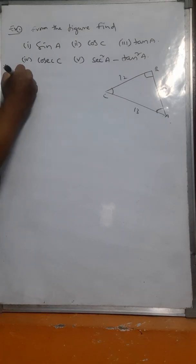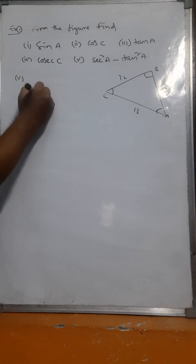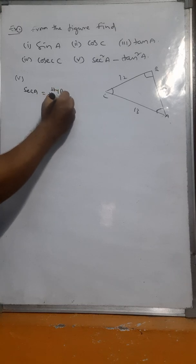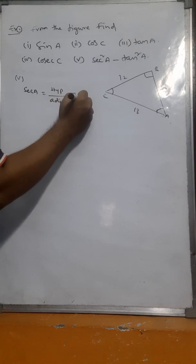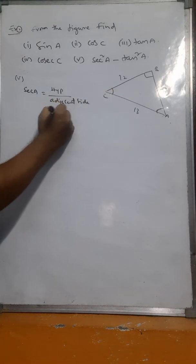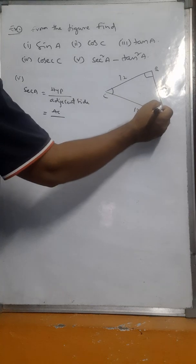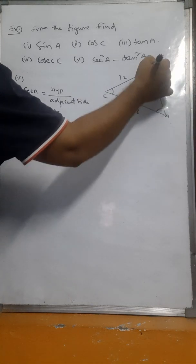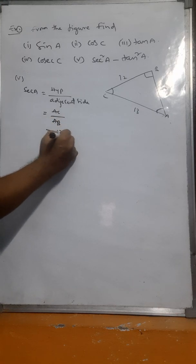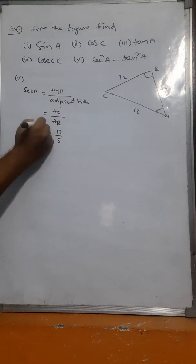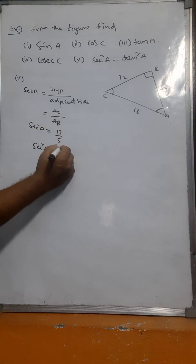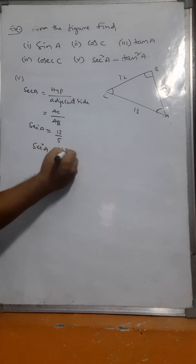For the fifth one, sec A means hypotenuse by adjacent side. So hypotenuse AC divided by adjacent side AB gives 13 by 5. Squaring this, sec² A equals 13² by 5², which is 169 by 25.